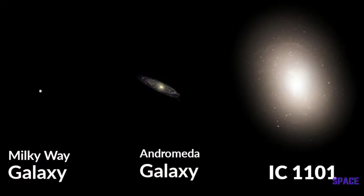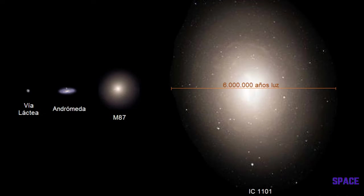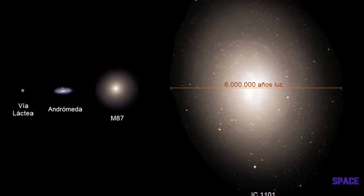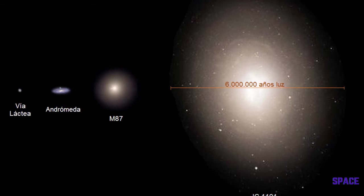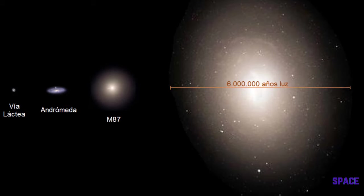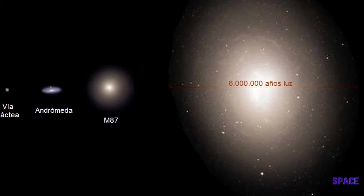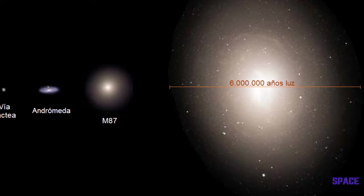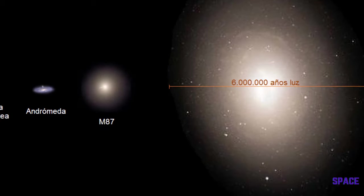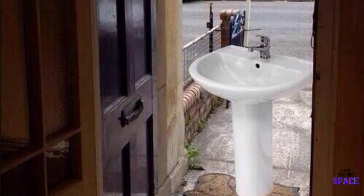However, one of the largest galaxies in the observable universe is an elliptical galaxy known as IC 1101. Its halo extends 2 million light years from its core and contains around 100 trillion stars. For comparison, our galaxy contains around 100 to 400 billion stars. Just let that sink in — not literally.